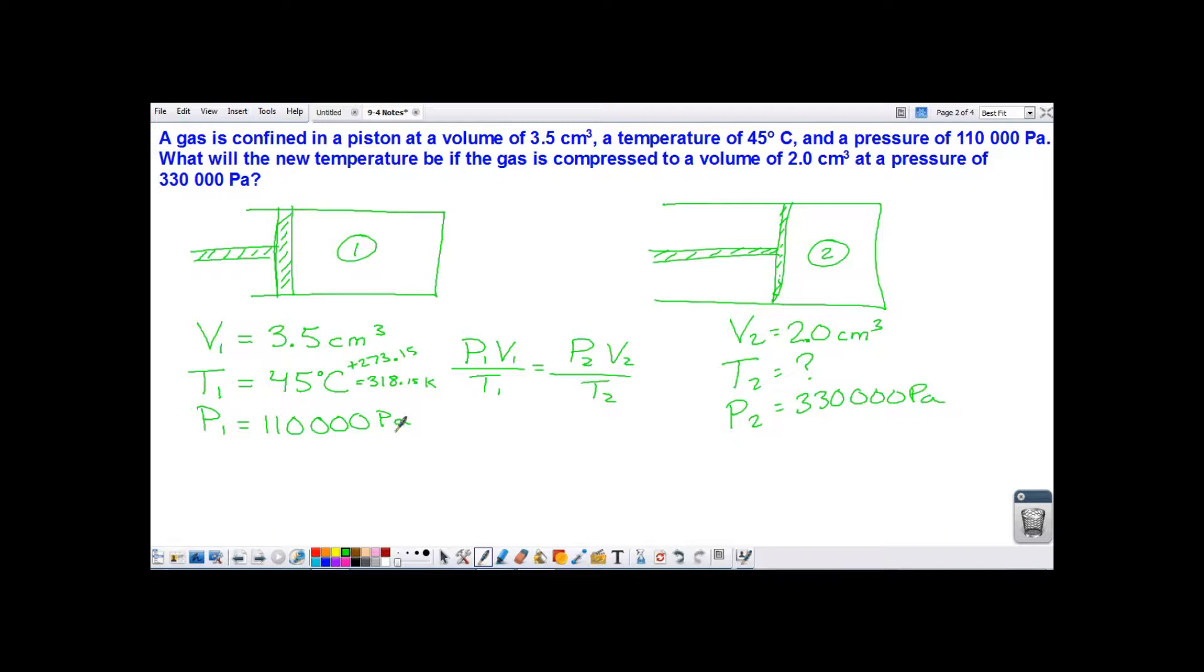And now I'm ready to go ahead and substitute here. So I've got 110,000 times 3 and a half divided by 318 and 15 hundredths is equal to 330,000 times 2 divided by temperature 2. And now we can solve this one of two ways. You can simplify the left-hand side and then simplify the right-hand side and solve, or you can cross-multiply.